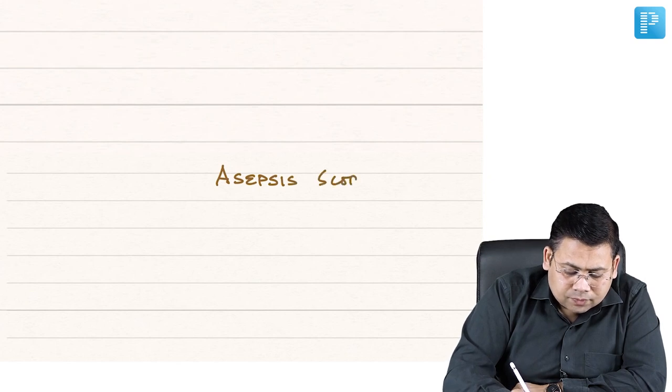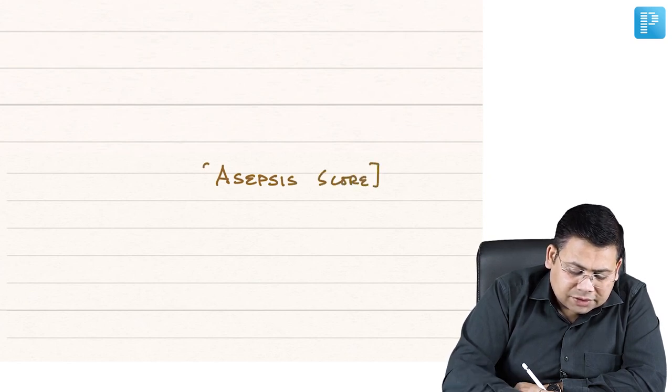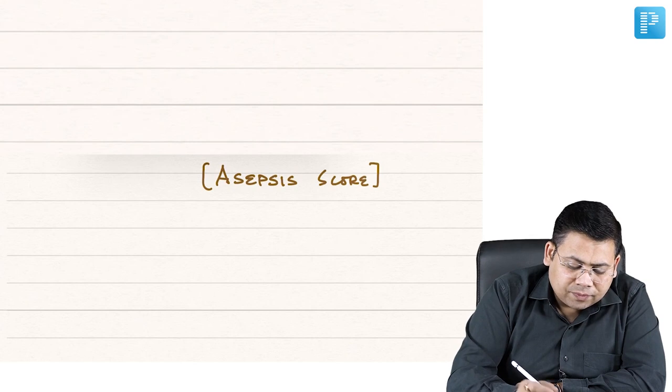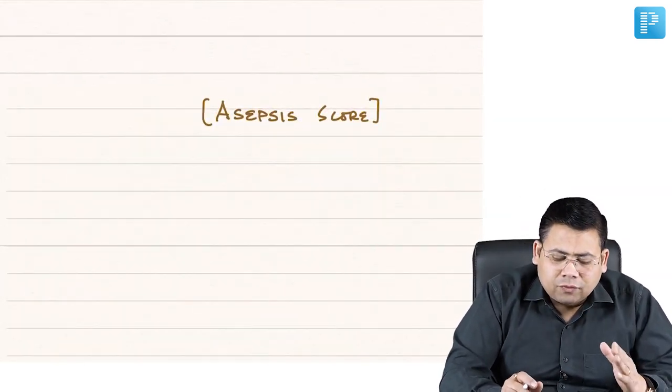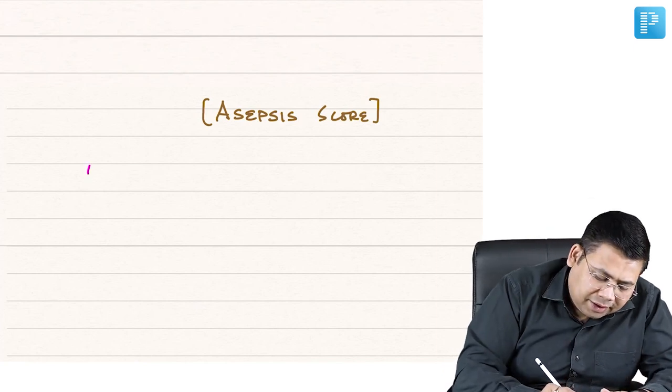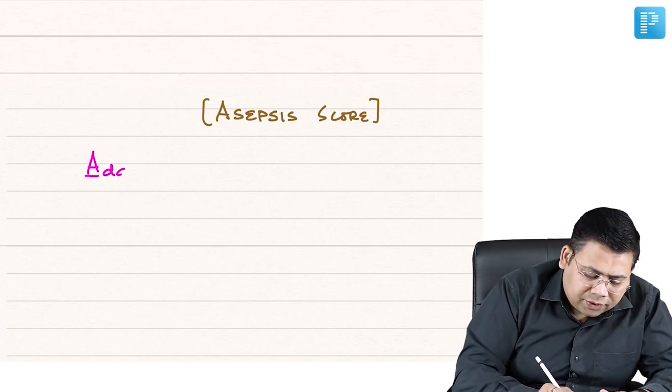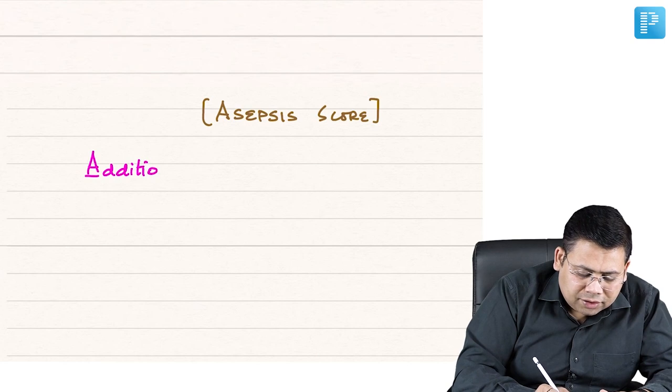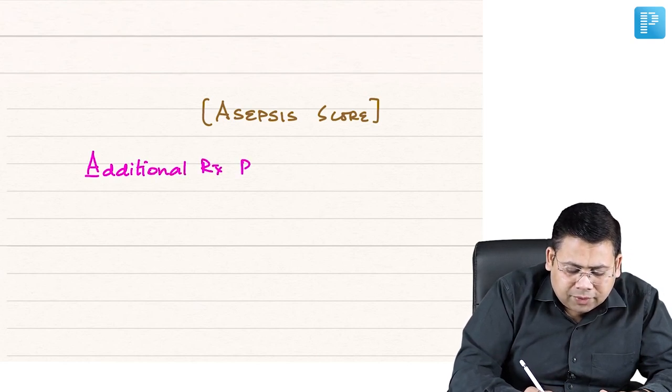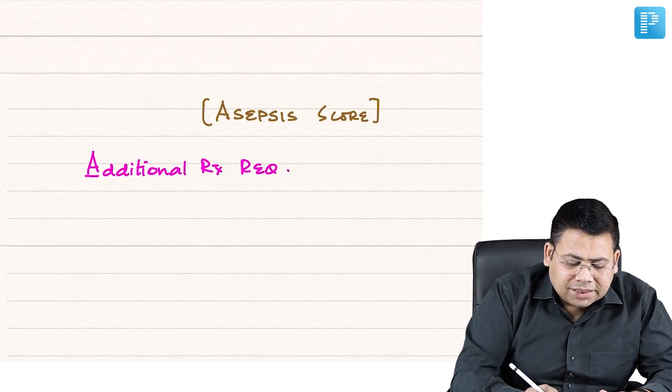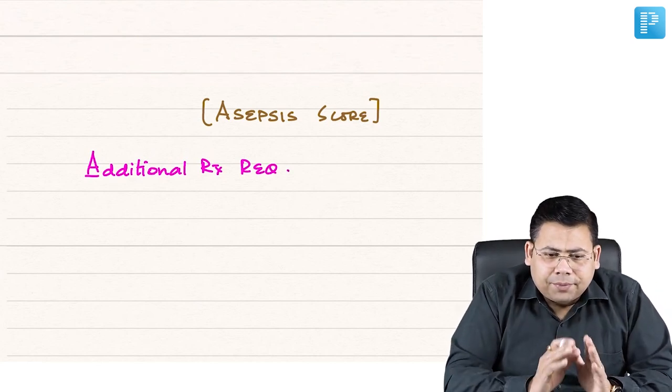The ASEPSIS score is a point-based scoring system. The point calculation will never be asked in your exam, but you should be knowing what are the parameters. A stands for additional treatment required.